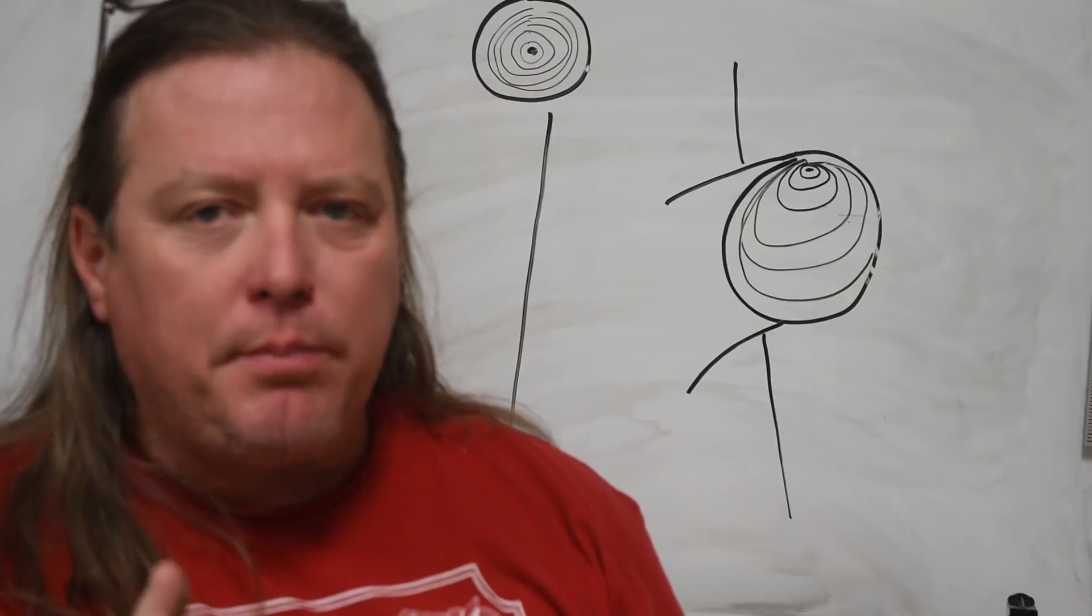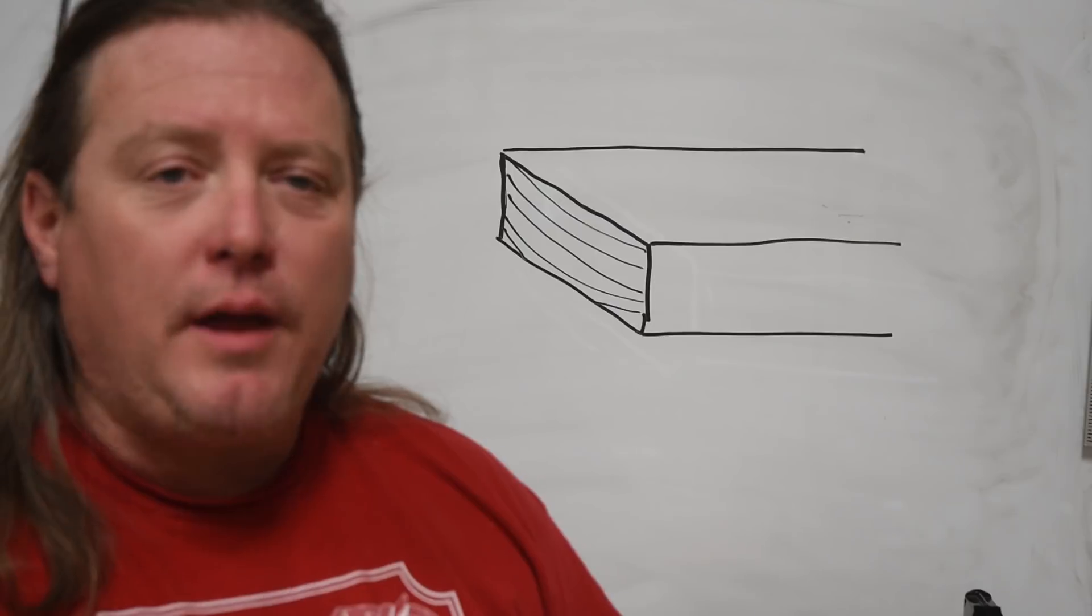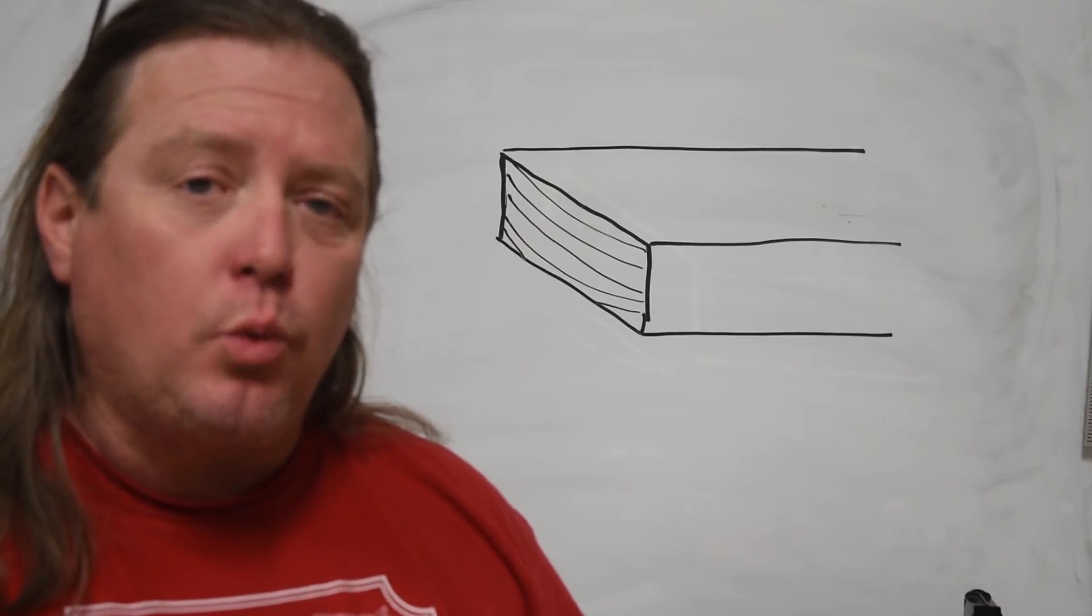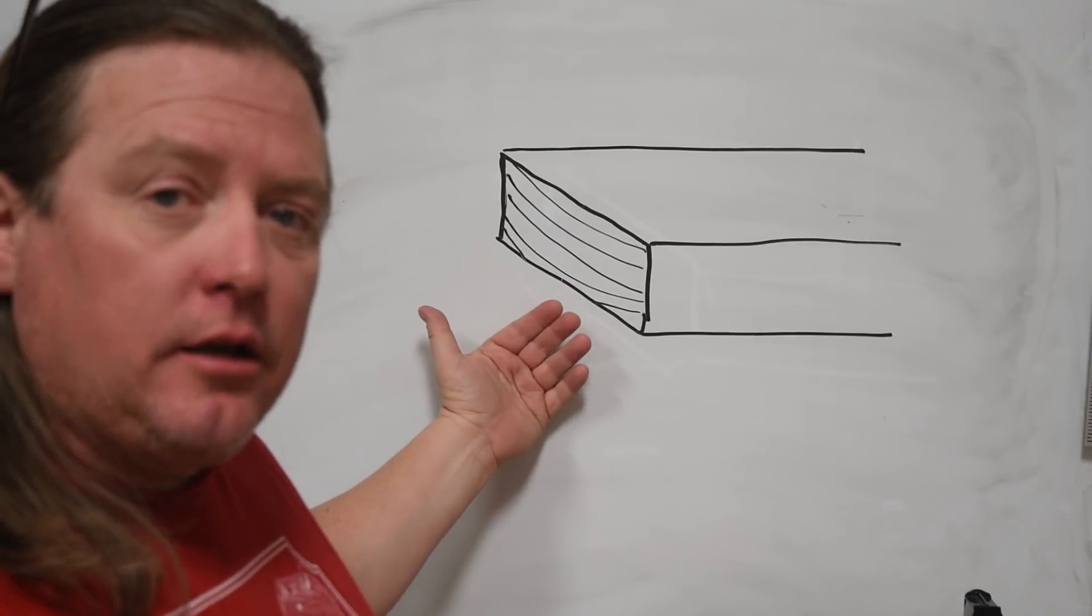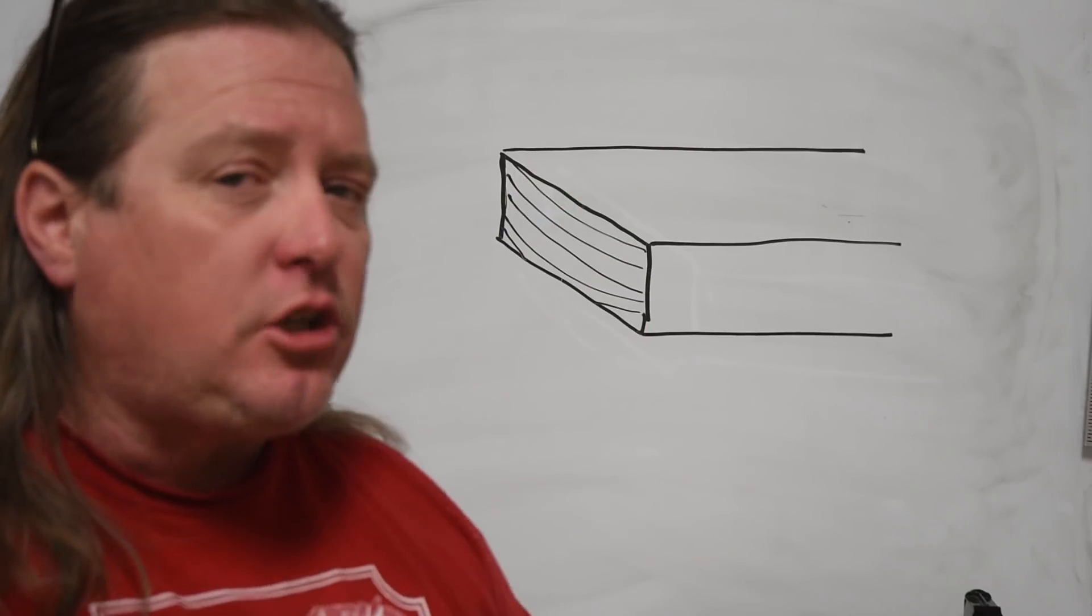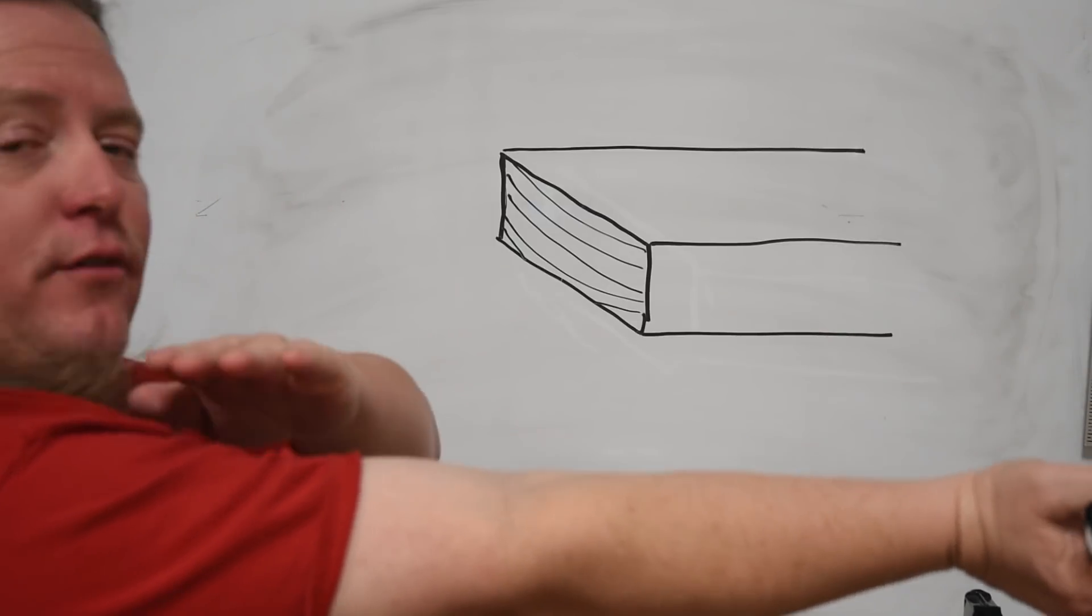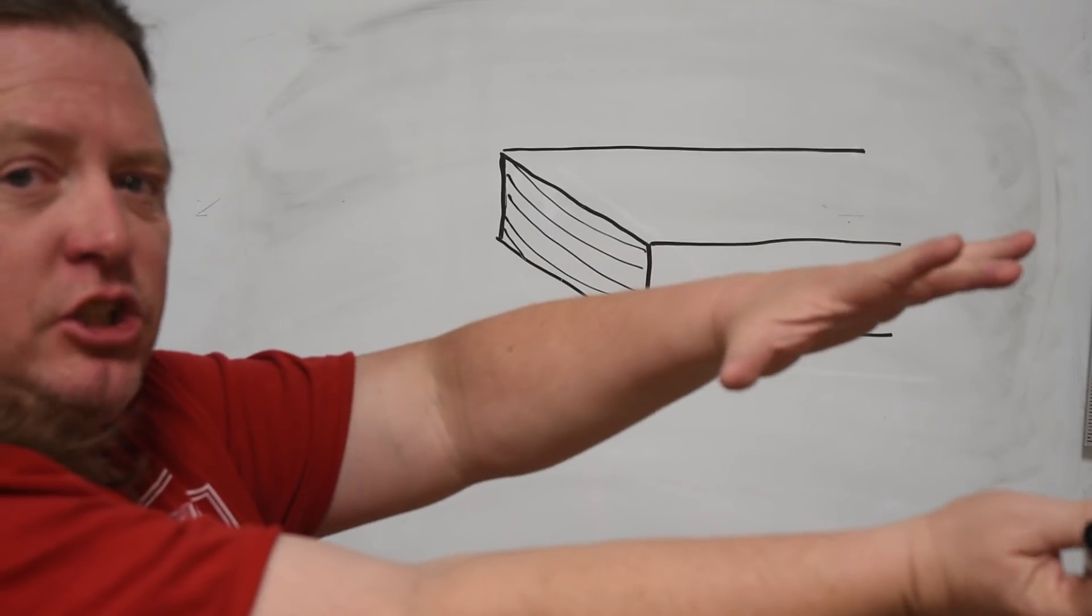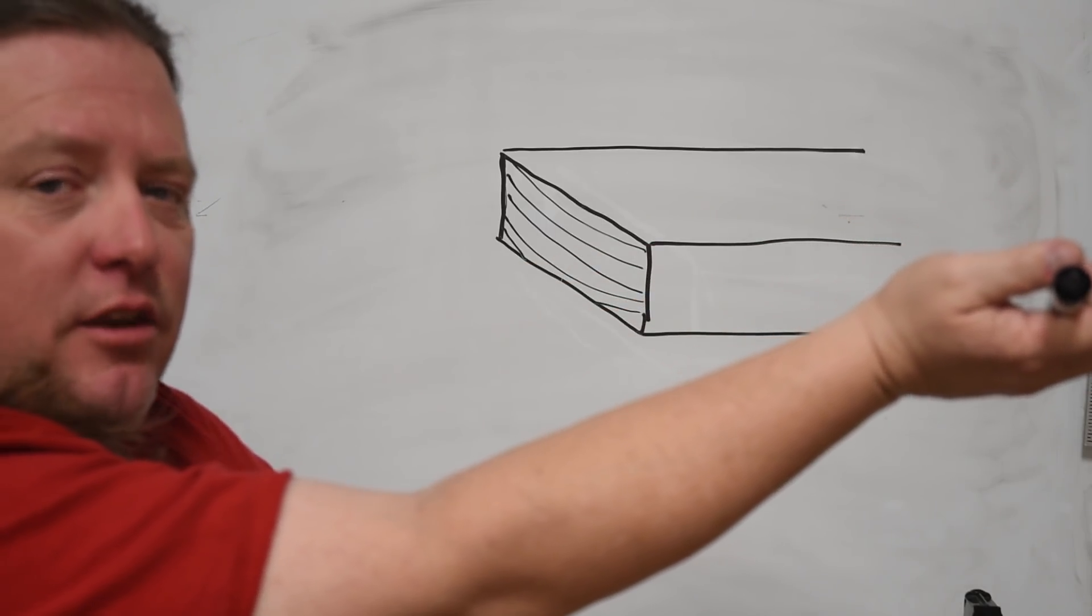But in order to balance all that weight that a branch is having, what happens is the pith grows up towards the top of the branch and all the wood comes up underneath it. Because the pith is the balancing point whether pressure is coming this way or that way. Now here's the problem. If you have a board that's milled from a piece of wood that has a lot of tension or reaction wood, a lot of times you can't tell that just by looking at the end grain.